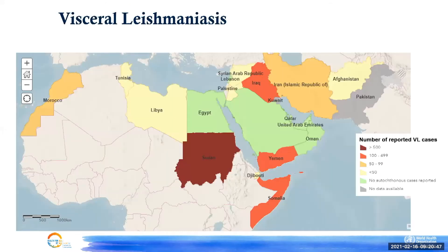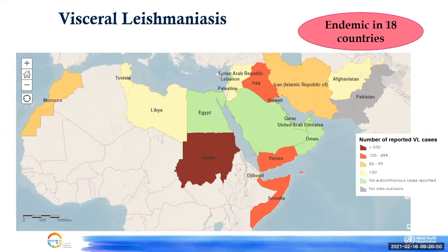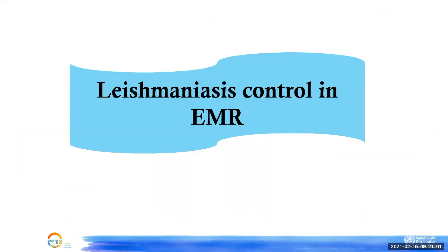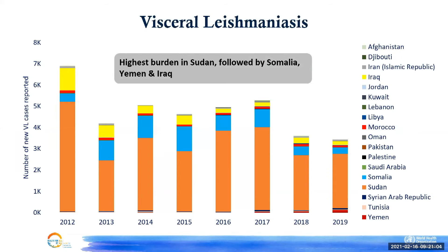Visceral leishmaniasis is also endemic in 18 countries. The largest burden is in Sudan, followed by Somalia, Yemen, and Iraq. Over recent years, the visceral leishmaniasis burden in Sudan has significantly decreased, which is mainly attributed to the supply of safe and effective drugs to Sudan free of charge through the WHO medicine donation programme.